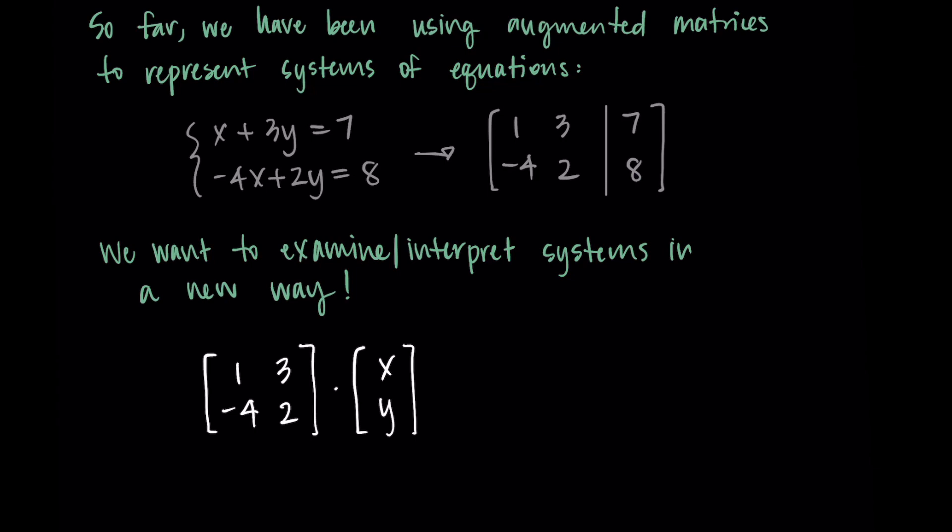You can think of this as the solutions to the system. So whatever the solutions would be, the x and y values, they go in this vector. Then we're going to actually write an equal sign to make an equation and put the values that we're getting equal to, the b values, on the other side. So 7 and 8.